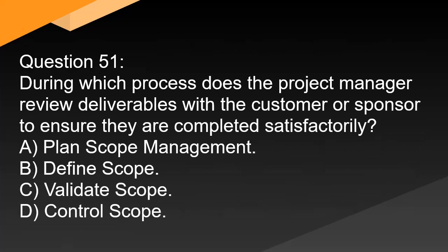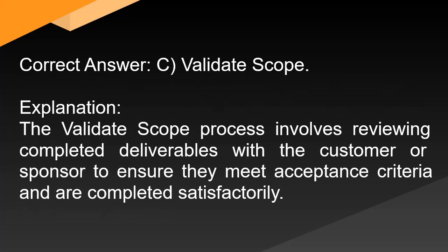Question 51: During which process does the project manager review deliverables with the customer or sponsor to ensure they are completed satisfactorily? A. Plan scope management. B. Define scope. C. Validate scope. D. Control scope. Correct answer: C. Validate scope. Explanation: The validate scope process involves reviewing completed deliverables with the customer or sponsor to ensure they meet acceptance criteria and are completed satisfactorily.